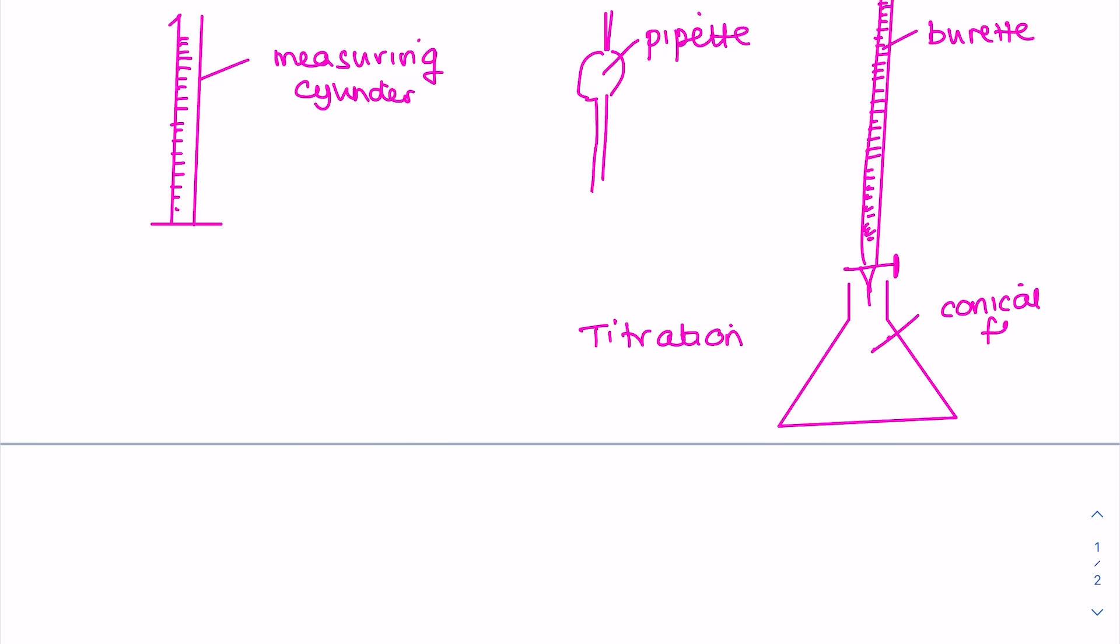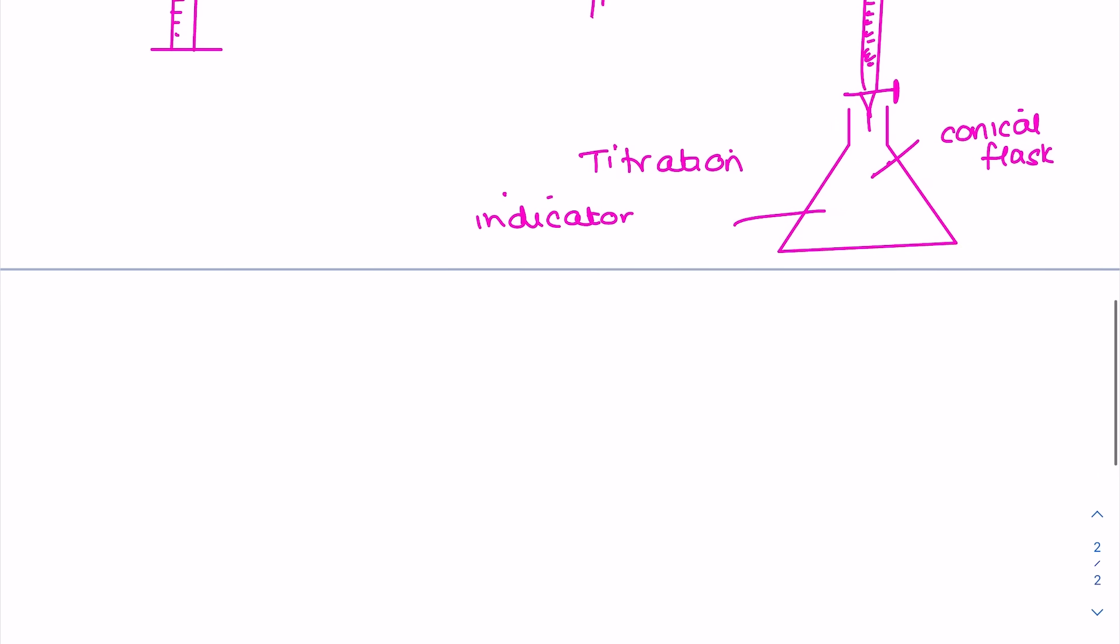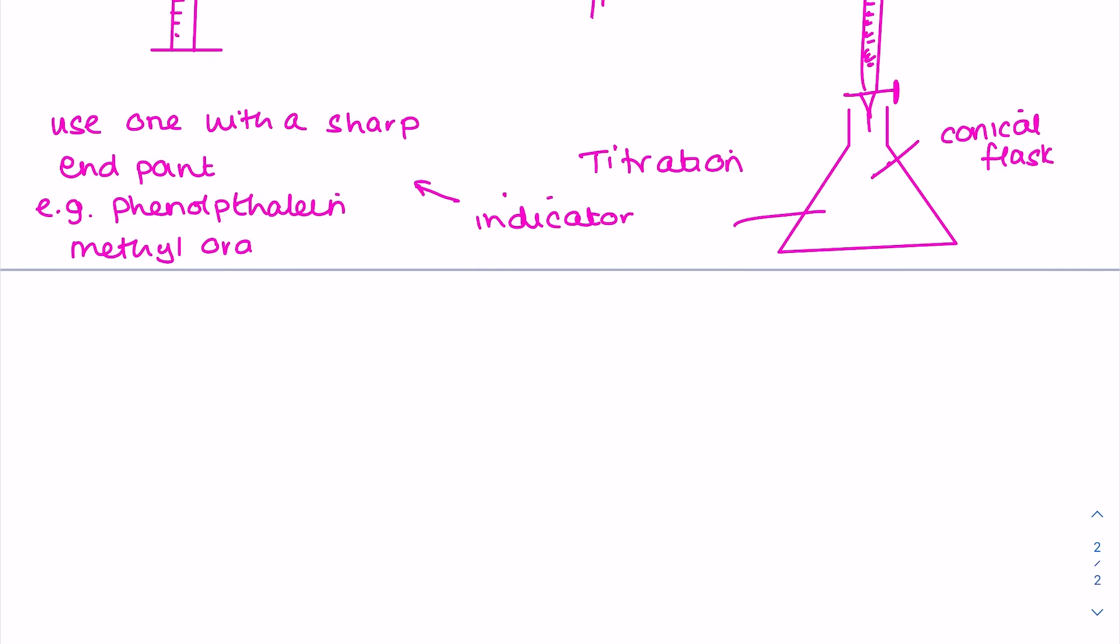The type of indicator you pick is quite important. You want to use one with a sharp endpoint, so basically only has two colors, for example phenolphthalene or methyl orange. They're both good examples.